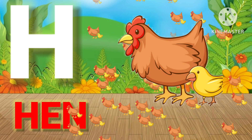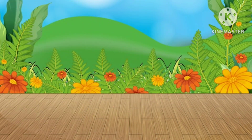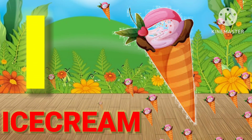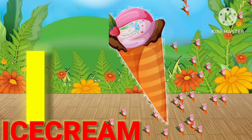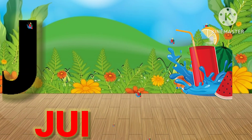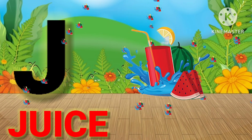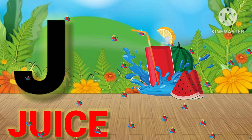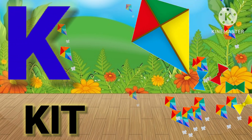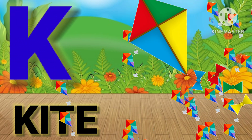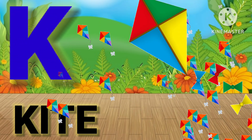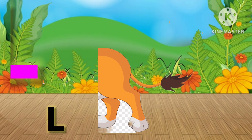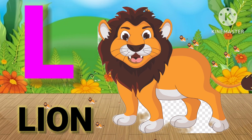I for Ice Cream, J for Juice, K for Kite, L for Lion.